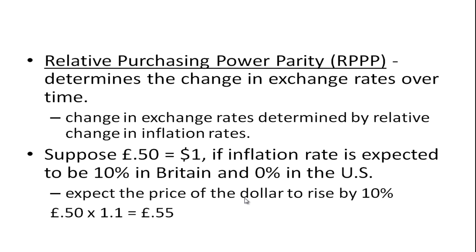Suppose the exchange rate is £0.50 per one dollar. If the inflation rate is expected to be 10% in Britain and 0% in the US, then we expect the price of the dollar to rise by 10%. We take that exchange rate of £0.50, multiply it by 1.1, and get £0.55. This means one US dollar gets you more pounds sterling, so the value of the US dollar has risen.